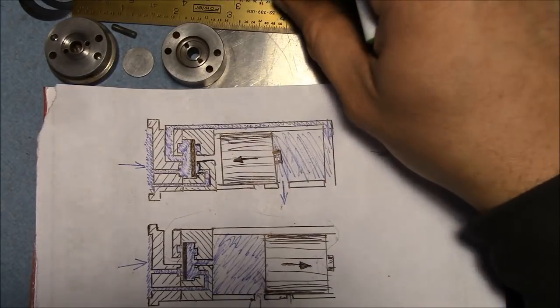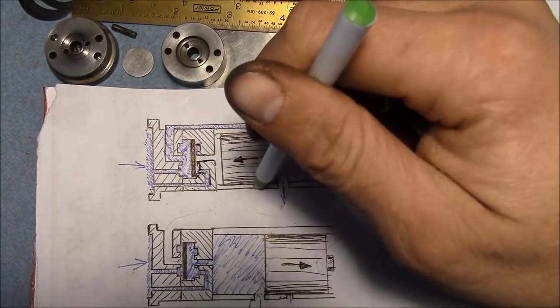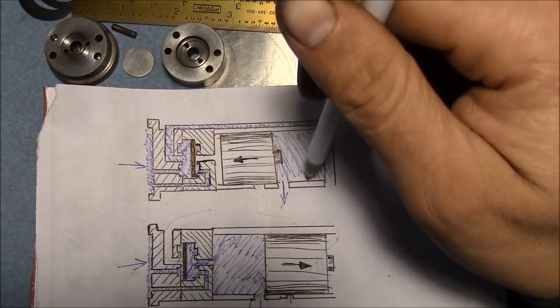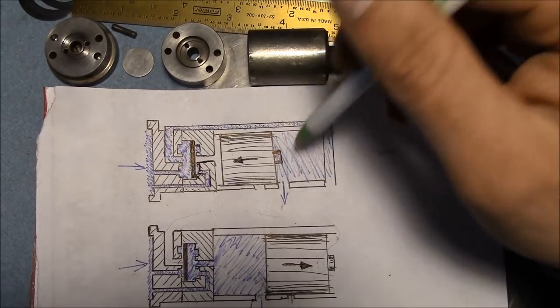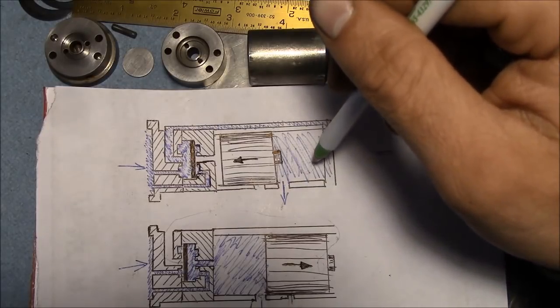So as the piston moves back and forth, it uncovers one or the other of these exhaust valves. Kind of like a two-stroke engine. So we do not need a separate valve here to exhaust the air. The piston is its own valve.